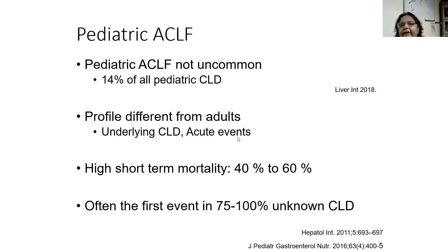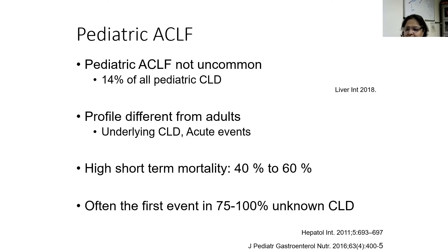For pediatric ACLF, we know that 10 to 14% of all pediatric chronic liver disease may land up with ACLF. The profile is different from adults. There is high short-term mortality, even in these patients, but slightly less than that of adults — 40 to 60% by 90 days. Often the first event is present in 75 to 100% of cases in the unknown, undiagnosed chronic liver disease.